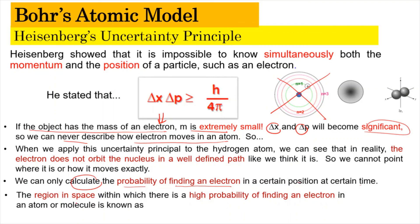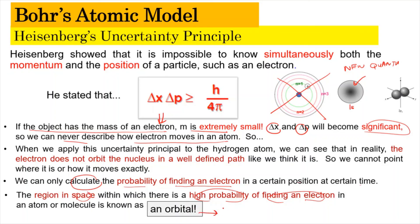What we can do is only calculate the probability of finding an electron in a certain position at a certain time. This region of space in which there is a high probability of finding an electron is known as the orbital. So in the new quantum mechanical model, they reject Bohr's idea but believe in the concept of orbitals, such as the 1s orbital and the 2px orbital. This concept will be covered in subtopic 2.2 in the next video. That's all for today's video — see you again some other time. Bye!